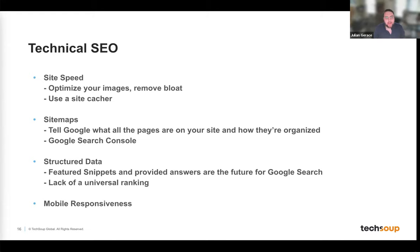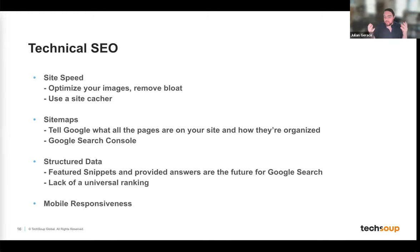Another thing to look at is your sitemap. A sitemap is a technical document — not your navigation menu — that you can upload to Google to say 'here are all my pages, here's how they're organized, here's what I want you to crawl.' This is especially important for complex sites where the crawler might miss things. By uploading the sitemap, you hand Google a complete picture of your site.